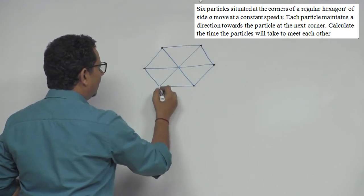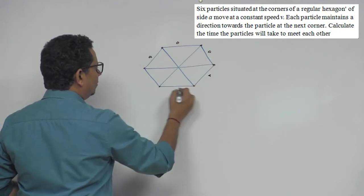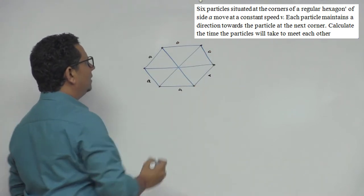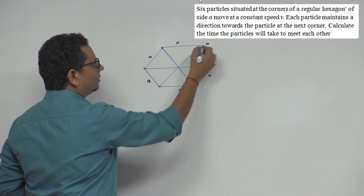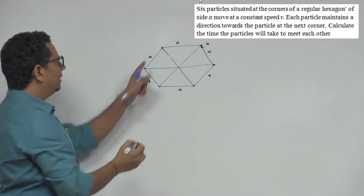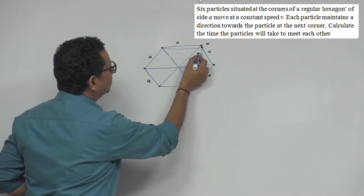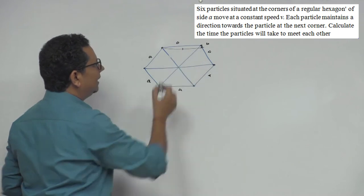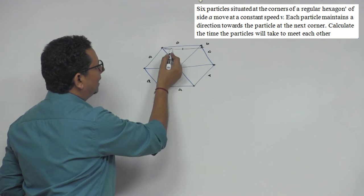A particle here, here, here - a regular hexagon, six particles, this side a. Now this particle, let's say this particle has direction, velocity. Now this particle at the corner, this particle's direction is towards which particle? This is the time.